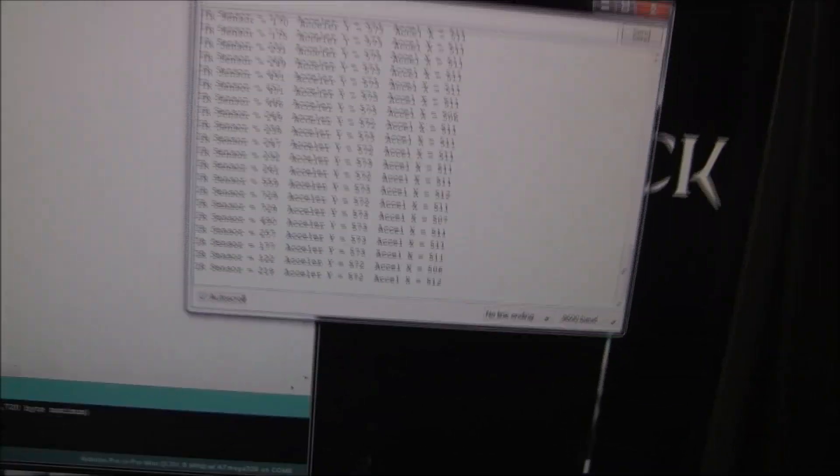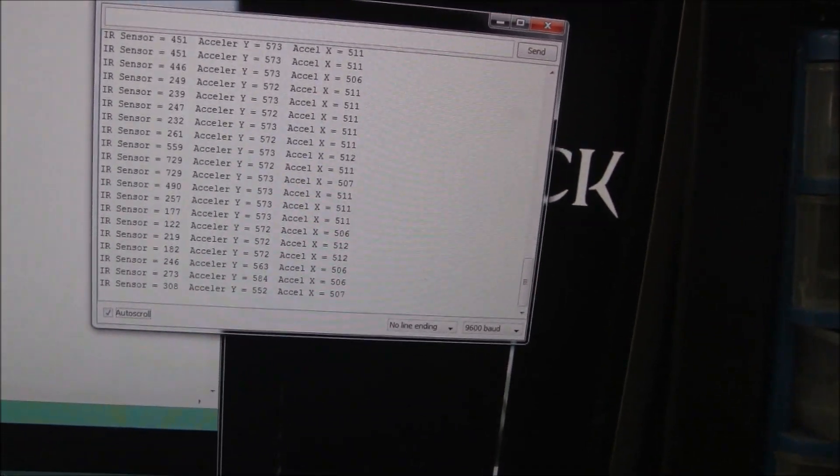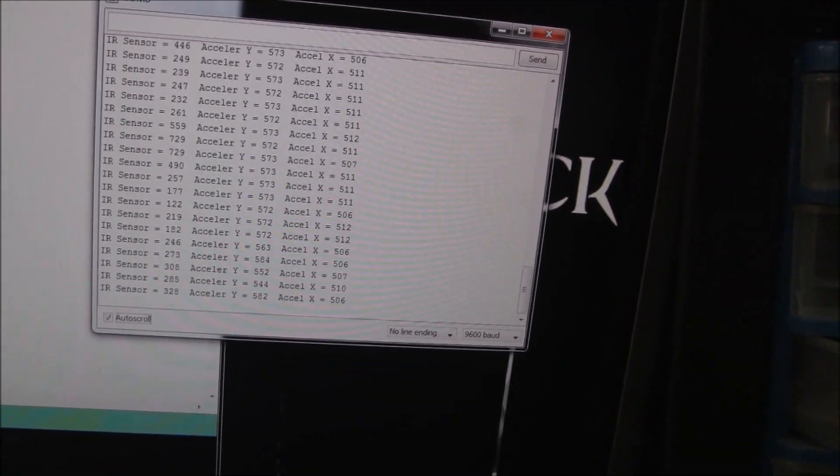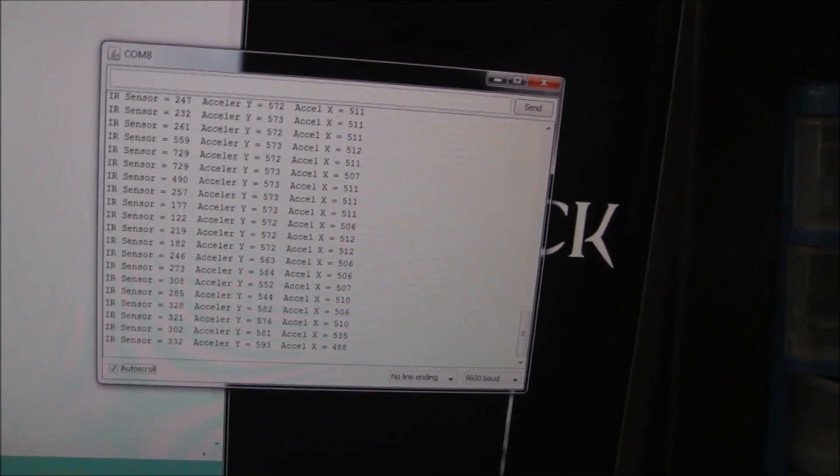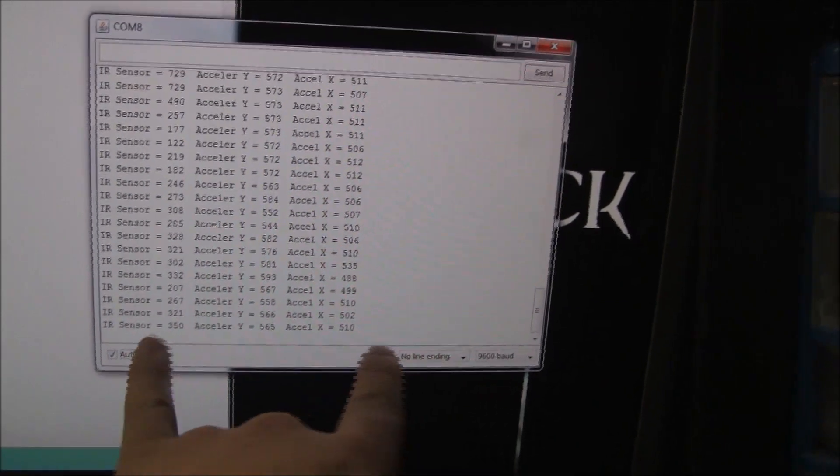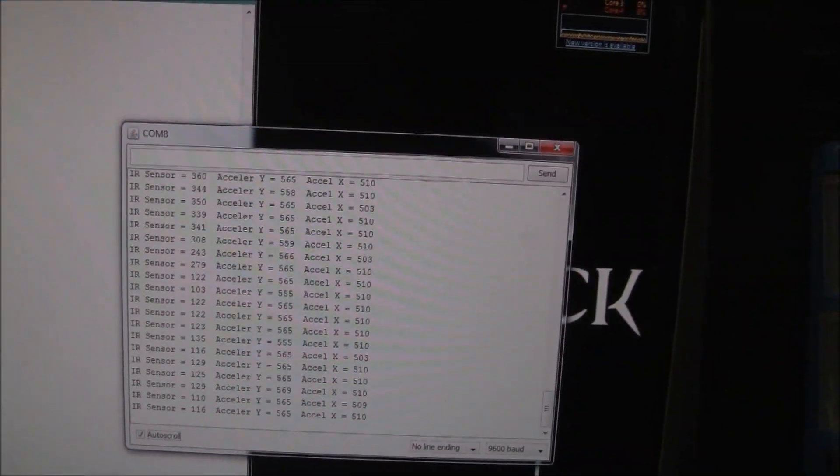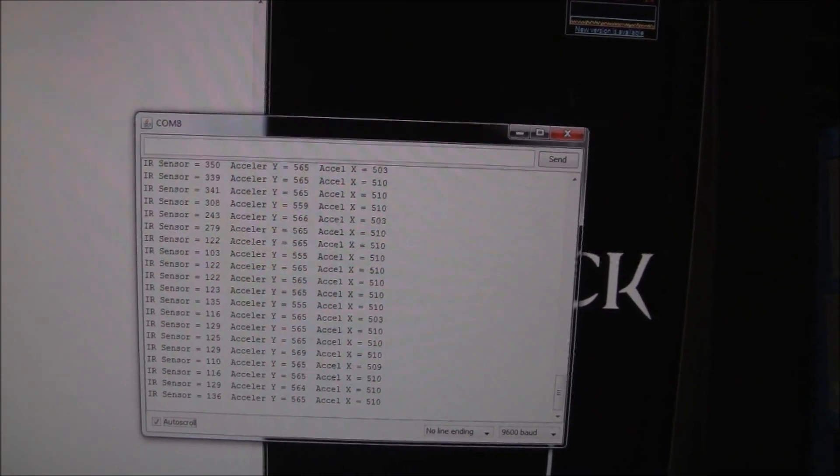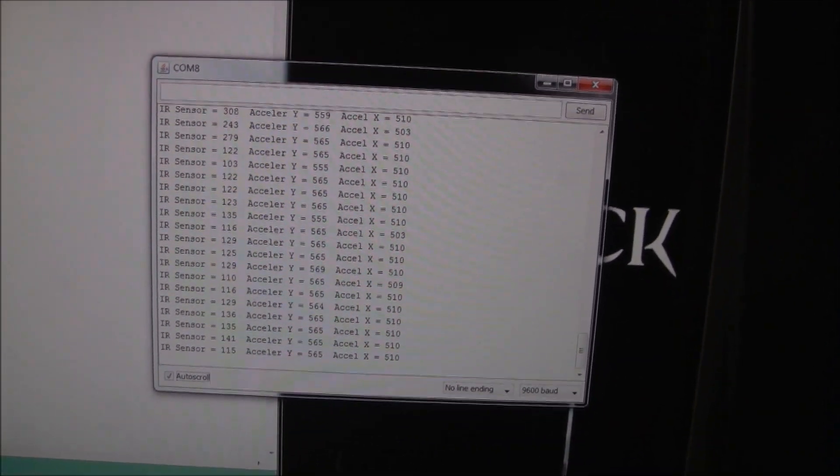So, and then when I go up and down, Y should move. Left and right you're gonna see X move more. So what we'll do is we're gonna take an average of these. So it doesn't really matter what they are. We'll take an average and then if the value moves a certain amount, then we can trigger something.